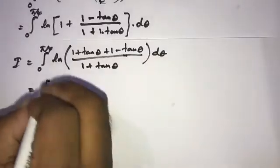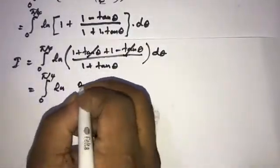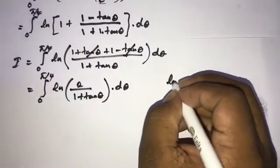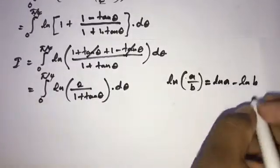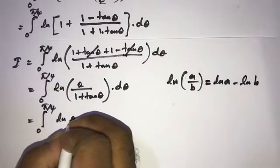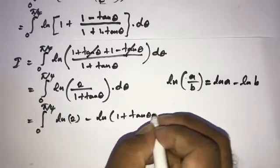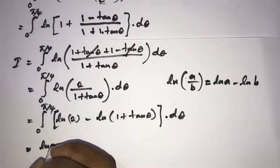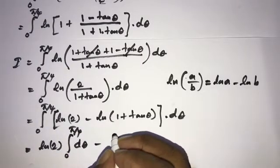So I equals the integral from zero to π/4 of natural log of (1 + (1 − tan(θ))/(1 + tan(θ))) dθ. The tan(θ) terms cancel in the numerator, giving natural log of 2 over (1 + tan(θ)). Using the property ln(a/b) = ln(a) − ln(b), we split this into the integral from zero to π/4 of natural log of 2 dθ minus the integral from zero to π/4 of natural log of (1 + tan(θ)) dθ.